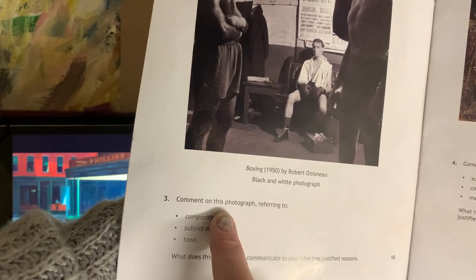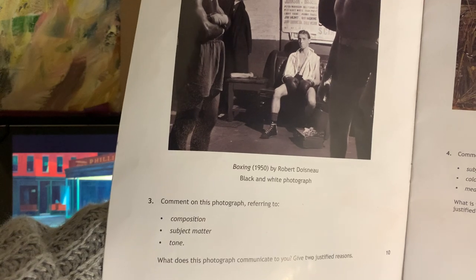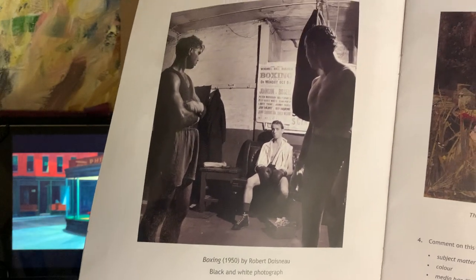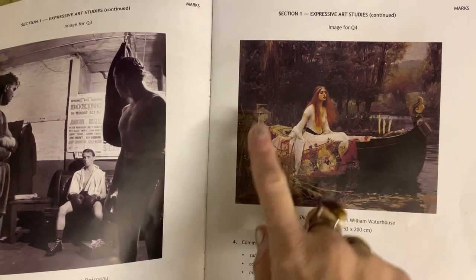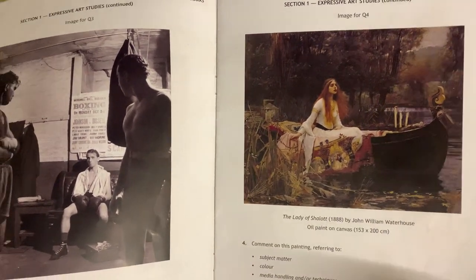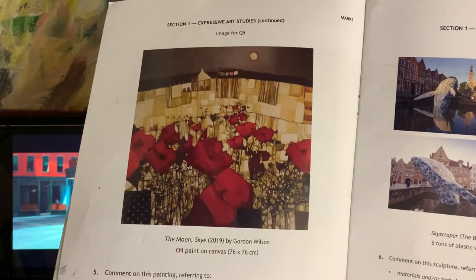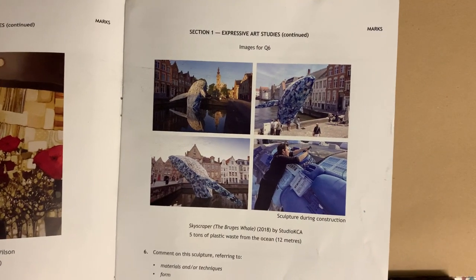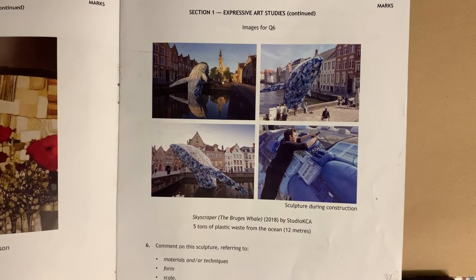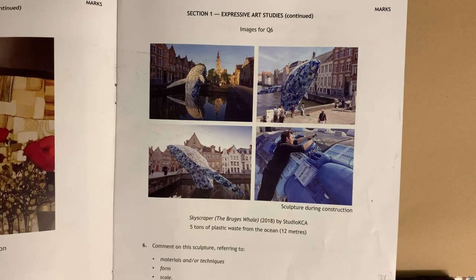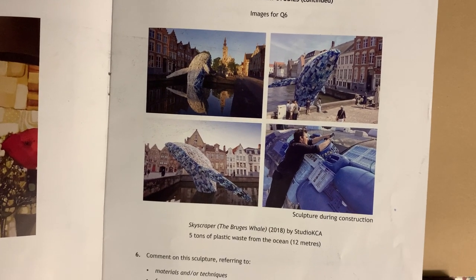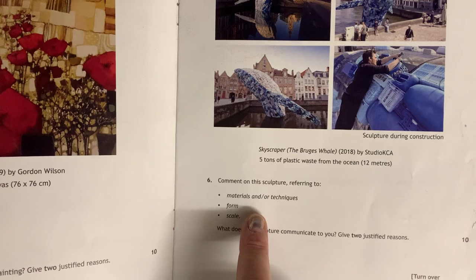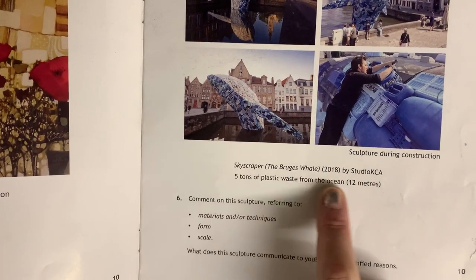Look what's here: composition, subject matter and tone — you treat it the same way. You might get a figure composition or an image of a person in a setting. You might get a landscape. You might get a sculpture. Sculpture is one that we haven't focused on in class, but sometimes people look at them and think they'll have a go at that. So they have a look at what it says: materials, form and scale.